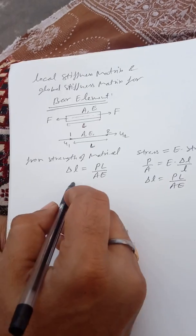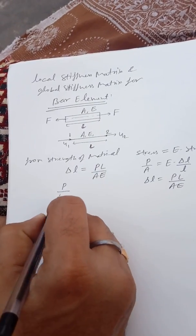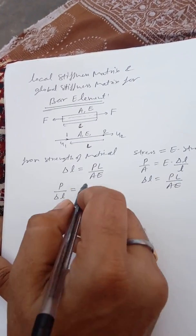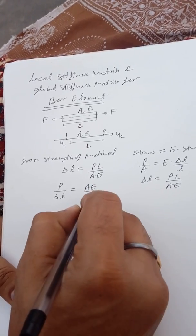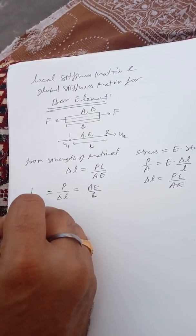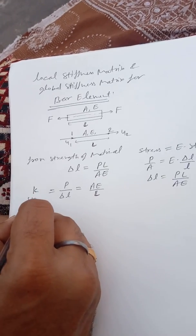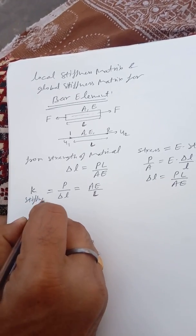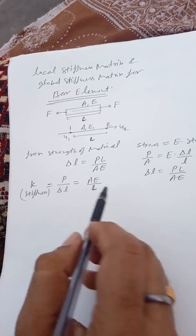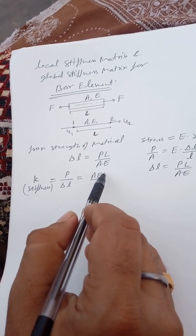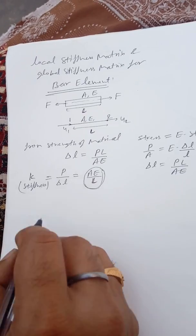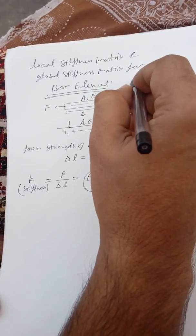And as we know, P upon delta L is equal to AE upon L. So this is known as the stiffness K. For the bar element, stiffness is AE upon L. This is the direct method.